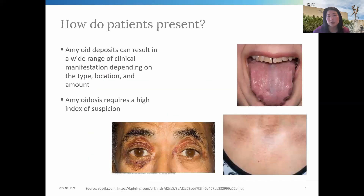So how do patients present? Amyloid deposits can result in a wide range of clinical manifestations, depending on the type, location, and the amount of protein that's deposited. Some of the more classic signs or exam findings include an enlarged tongue or macroglossia, periorbital bruising, or thickened waxy skin due to dermal infiltration of amyloid proteins.